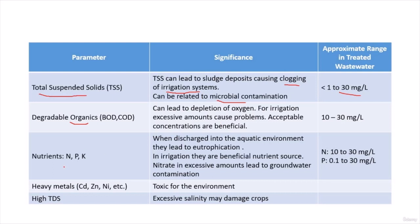We also have the three nutrients — nitrogen, phosphorus, and potassium. When discharged into the aquatic environment, they lead to eutrophication and depletion of oxygen within the surface water. But in irrigation, they are a beneficial nutrient source and can replace fertilization. However, nitrate in excessive amounts will lead to groundwater contamination.